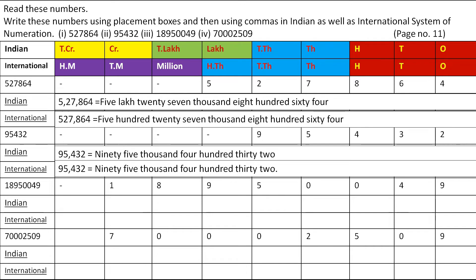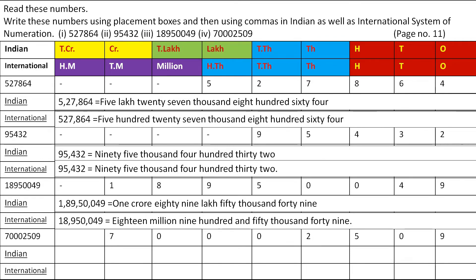Why are they the same? Because in the Indian and International Systems, till 10,000 the places are the same. But after that it changes. Let's see the next number: 1,89,50,049. The number name in the Indian Number System is 1,89,50,049. And in the International Number System it is 18,950,049.